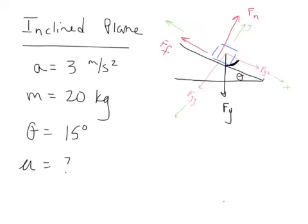Writing the equations of motion is the toughest part of inclined plane problems because there's so much going on. That's why I left out a force of pull down the plane. If there was a force of pull acting down the plane, you'd just have another vector acting alongside fgx — it would look like fp shown as a vector down the plane — but we don't have that in this problem.